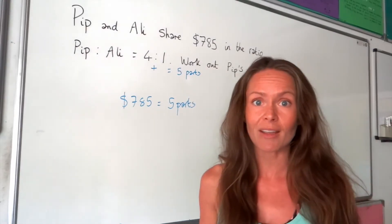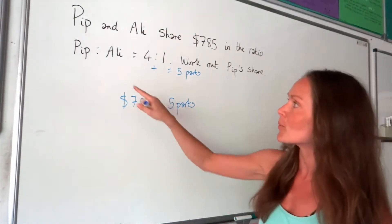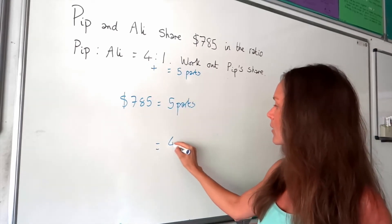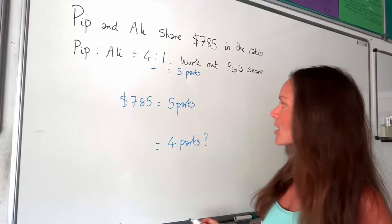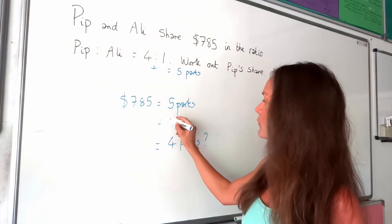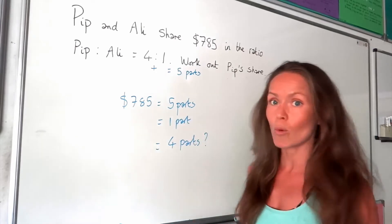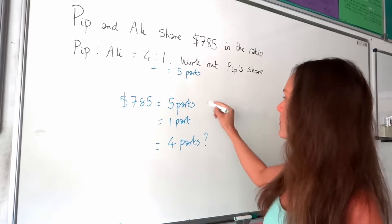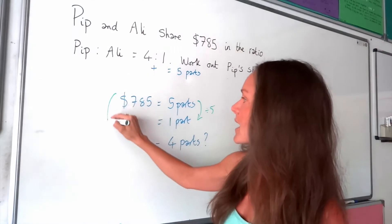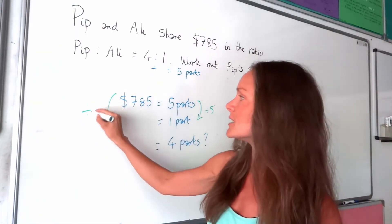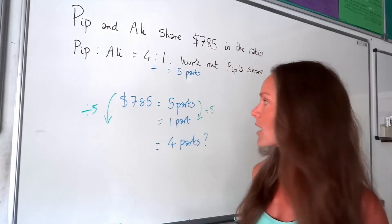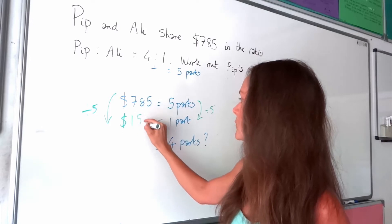We have to work out the share that Pip gets. When we look at the ratio, Pip gets four parts. So we need to work out the value of four parts, but before we can do that, we need to work out the value of one part. If we've got five parts and need to find one part, we divide by five — so I must divide that amount of money by five too. 785 divided by five gives 157.